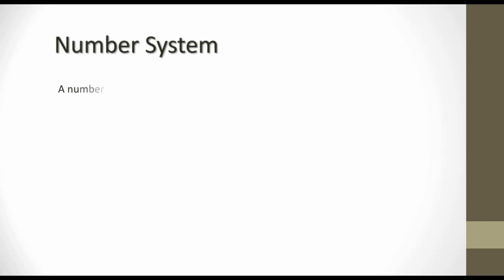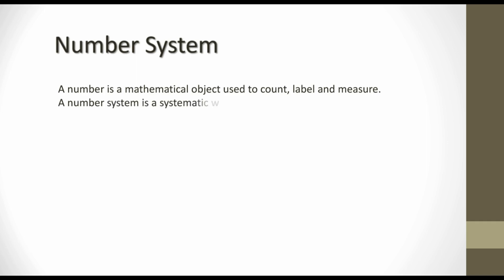Hello friends. In this video I explain the number system. We know that a number is a mathematical object used to count, label, and measure. We use numbers for various purposes in our day-to-day life. So a number system is a systematic way to represent numbers.